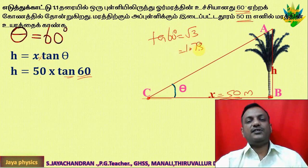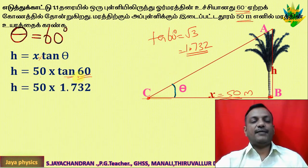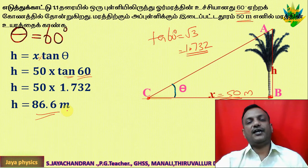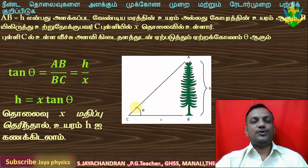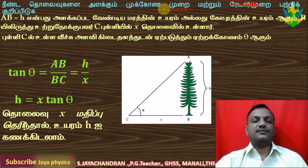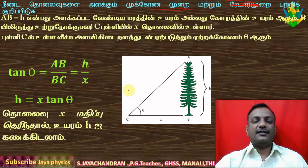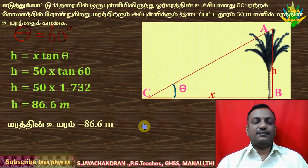Root 3 is 1.732. So 90 into 1.732 is 86.6 meters. So now we are going to look at the 2 meters. We are going to look at the 3 meters, the 1.3 meters. So this is 3 meters. If you are going to look at the 3 meters, I am going to look at the 3 meters.